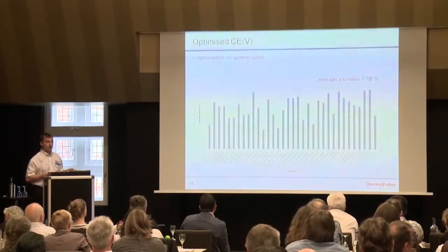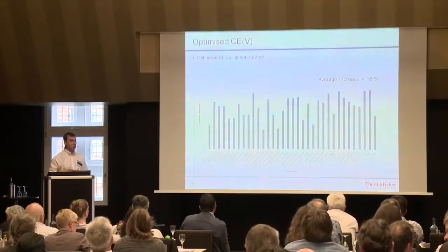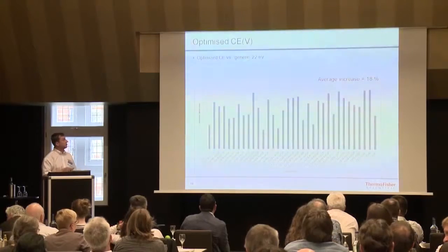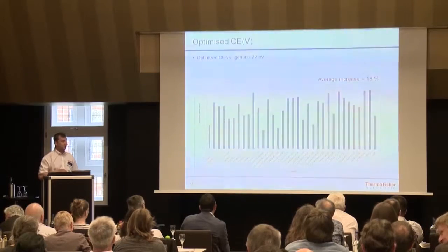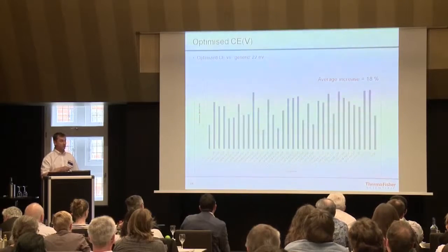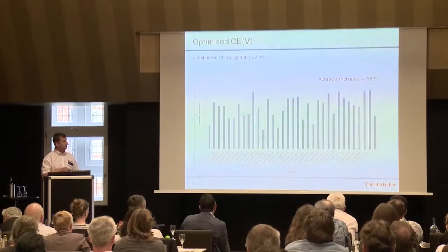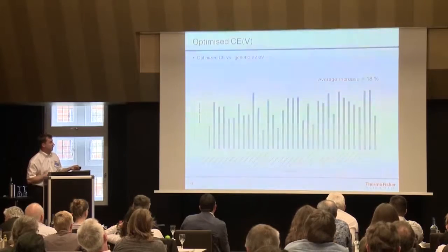Why do you need to do it? If you don't and use a generic 22 electron volts as we used in previous work, you get a decrease of 18% in sensitivity compared to an optimized collision energy. So this is an average increase of almost 20%, as you can see from this example.